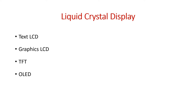Hi everyone, in this video we'll see about the liquid crystal display or LCD and how we can interface them with the Arduino board. LCDs are basically liquid crystal displays that come in a variety of different types. The most popular one used in embedded systems and with microcontrollers — and the one we are going to use — is a text LCD, which is capable of displaying text characters.